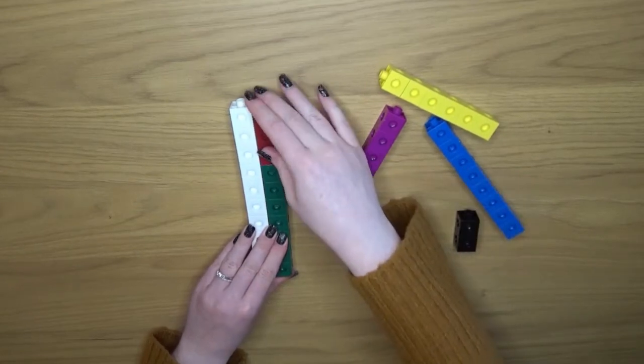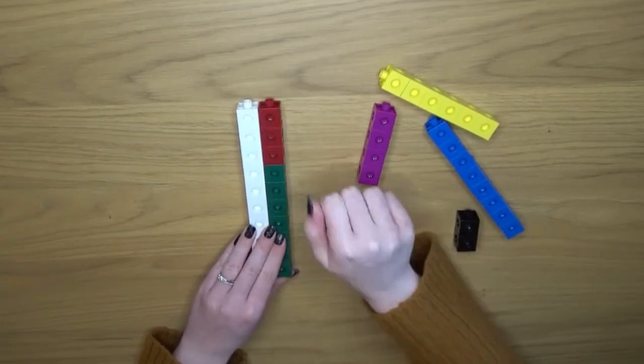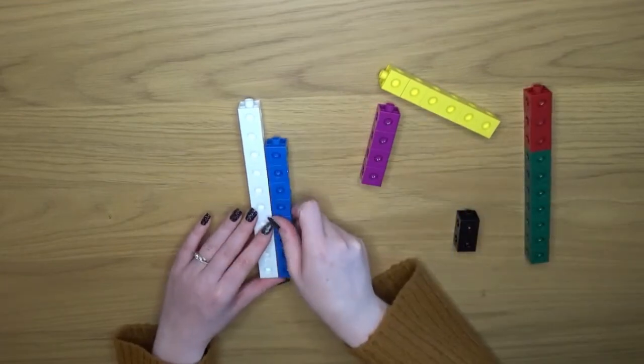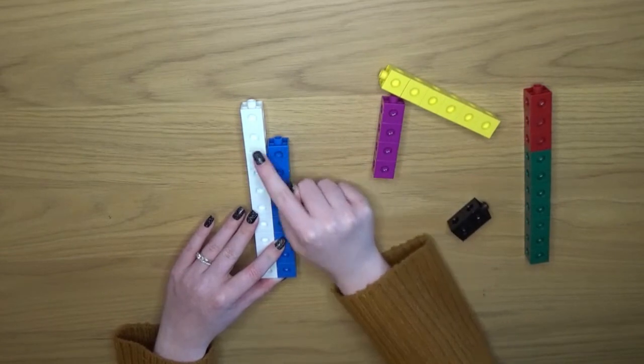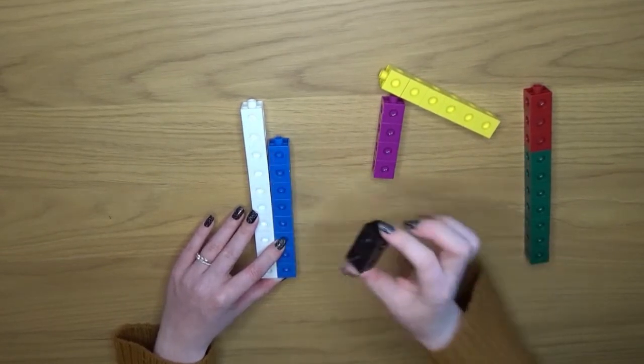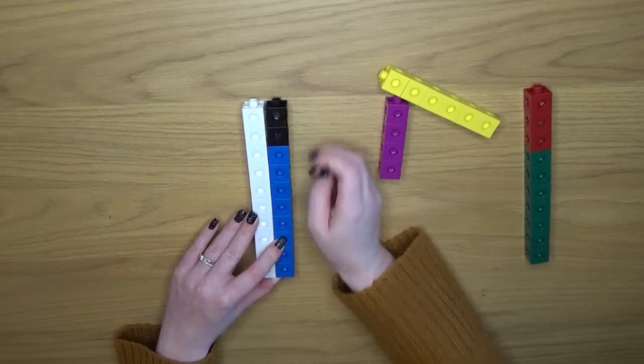Children can either use trial and error like I just did with the green and red blocks or they can use the first tower to work out how many more cubes they need. This activity of matching towers together means that you're giving children options and they have to find the pairs.